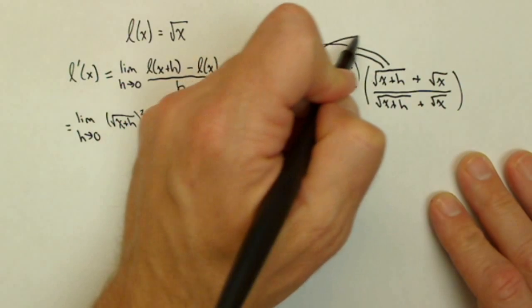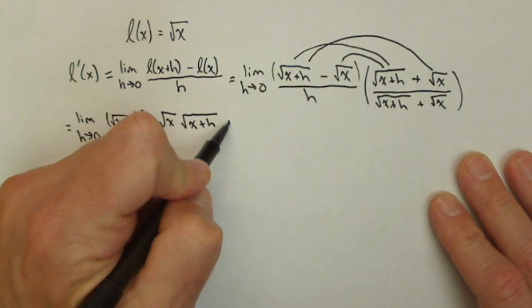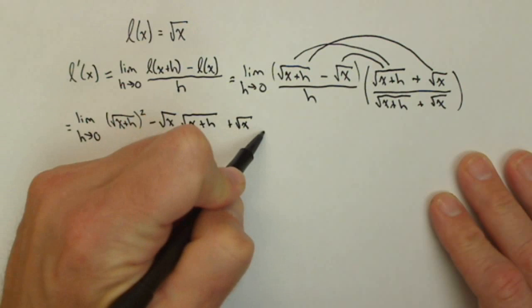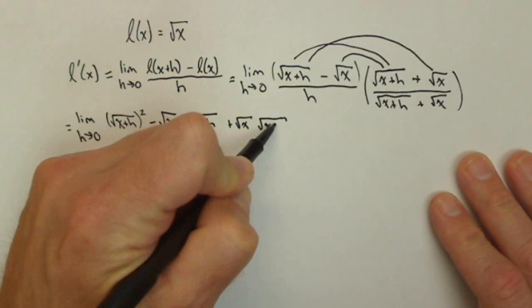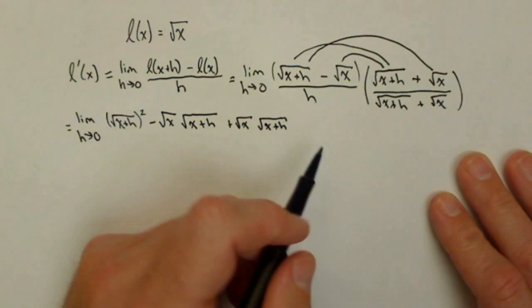Now when I multiply these two terms I'm going to get a positive square root of x square root of x plus h. You might already be starting to see what's about to happen.